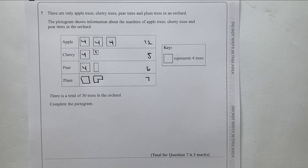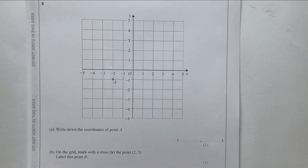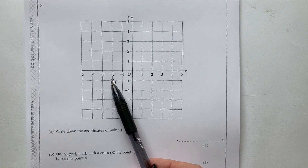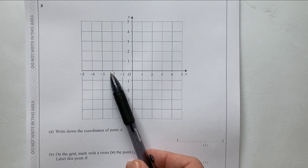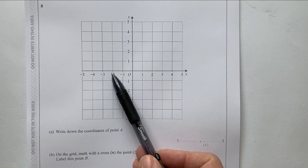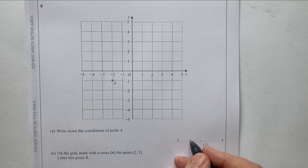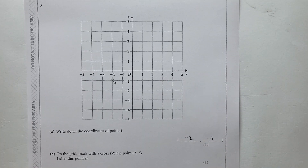Question eight is a coordinates graph. We're asked to write down the coordinates of point A. We always go along the corridor and up or down the stairs, so it's going to be minus two, then down to minus one. The coordinate of point A is (−2, −1).